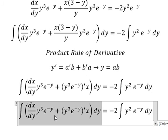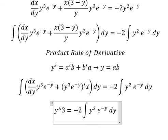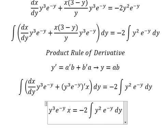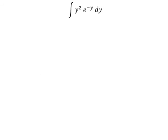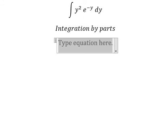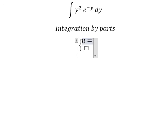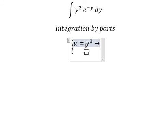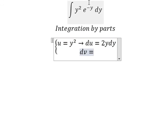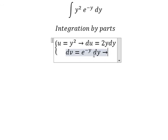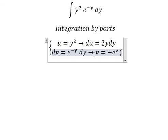So the integration gives us y to the power of 3, e to the power of negative y, integrated with respect to x. Now we need to concentrate on this part. We need to use integration by parts. I will let u equal y squared, so the first derivative gives us du equals 2y dy. For v, that is the integral of e to the power of negative y, which gives us negative e to the power of negative y.